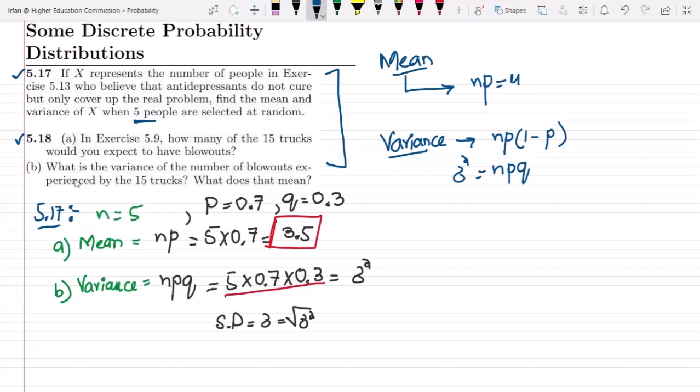Now let us move towards question 5.18. In question 5.18 part a: in exercise 5.9 how many of the 15 trucks would you expect to have blowouts? And b: what is the variance of the number of blowouts experienced by the 15 trucks?